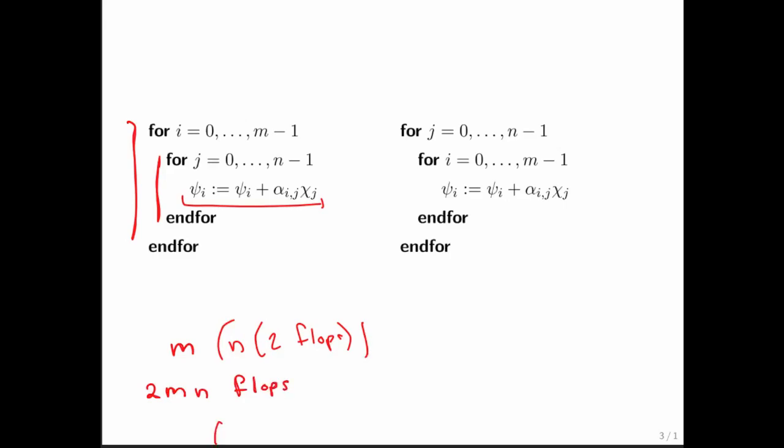On the right, you can do the exact same analysis. Two floating point operations for the inner statement. This loop executes m times, and then this loop executes n times. So the total is 2 times m times n. So whether you interchange these two loops or not, you still perform exactly the same number of computations.